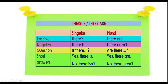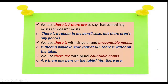To make a question, in singular start with 'is there', and in plural 'are there'. In short answers, when it is positive you can say 'yes, there is', and in negative 'no, there isn't'. In plural, in positive 'yes, there are', and in negative 'no, there aren't'.